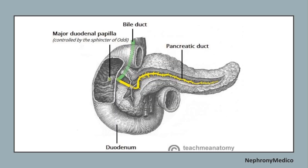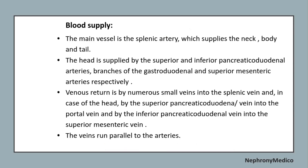This picture shows the opening of the major duodenal papilla in the duodenum. Regarding blood supply: the main arterial supply is the splenic artery, which supplies the neck, body, and tail. The head is supplied by the superior and inferior pancreaticoduodenal arteries, branches of the gastroduodenal and superior mesenteric arteries respectively.